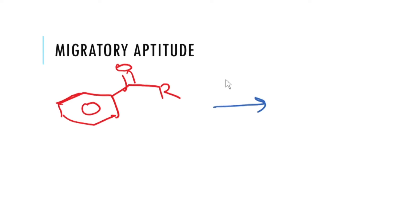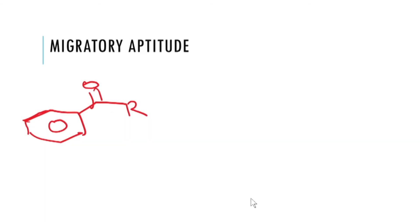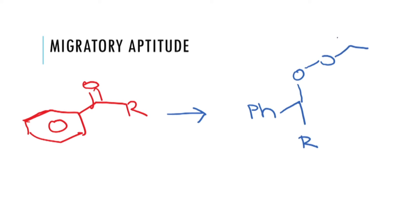But if you start with an asymmetrical ketone like acetophenone and do the Baeyer-Villiger oxidation, either the R group or the phenyl ring can migrate, giving a different product depending on which migrates. Let's draw out the intermediate to understand this.